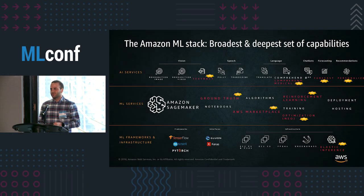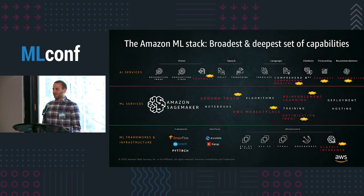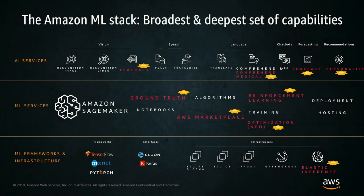Before I get to SageMaker, I wanted to cover the wide and broad portfolio of services that AWS has across AI services, such as Recognition, Textract, Poly, Transcribe, Translate, Comprehend, Lex, Forecast, and Personalize.